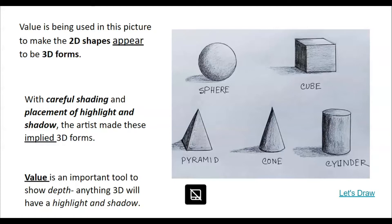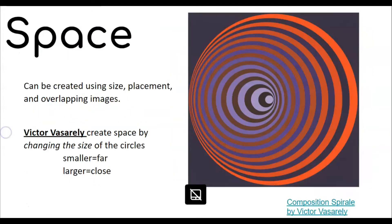With careful shading and placement of highlight and shadow, the artist made implied 3D forms. The shadows are all on the left side and the highlights are all on the top right side — that tells me the light source is up in the top right corner. Value is an important tool to show depth. Anything 3D will have a highlight and a shadow. Look at your hands right now — can you find highlights and shadows? Of course you can, because your hand is 3D. Space can be created using size, placement, and overlapping images.